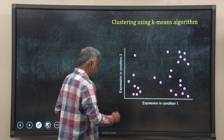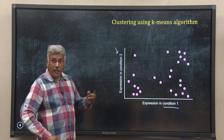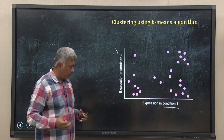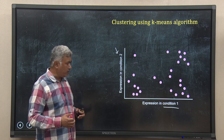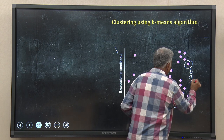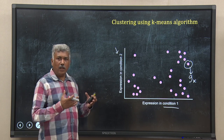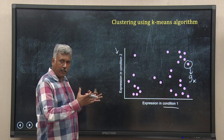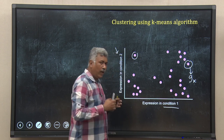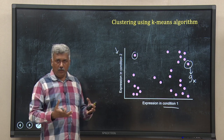Suppose I have two experimental conditions — condition 1 and condition 2, maybe two different drug doses. You have treated cells with that drug and measured the gene expression of hundreds or thousands of genes. I have shown only around 25 or 26 of such genes, and each of these points is one gene. I have a heterogeneous gene expression population — you can see gene x has quite different expression from this one.